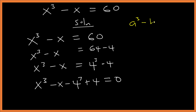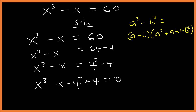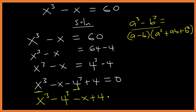Recall the difference of cubes formula: a cubed minus b cubed equals (a minus b)(a squared plus ab plus b squared). Looking at our expression, we can group x cubed minus 4 cubed together and minus x plus 4 together.